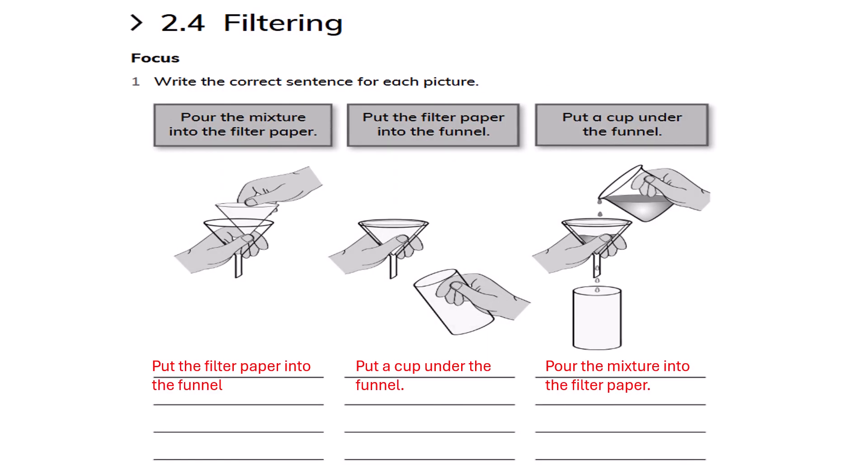Filtering. Write the correct sentence for each picture. The steps are: first, put the filter paper into the funnel; second, put a cup under the funnel; third, pour the mixture into the filter paper.